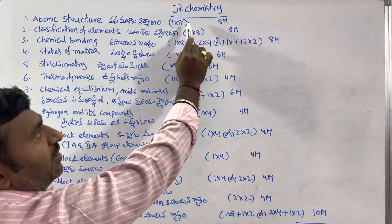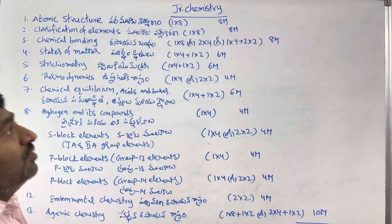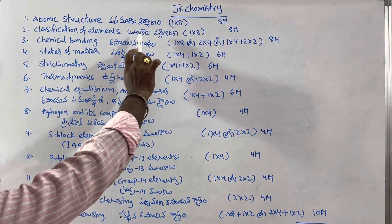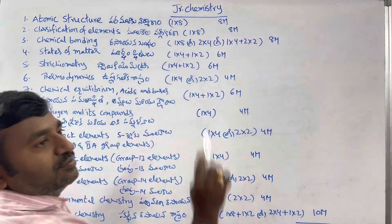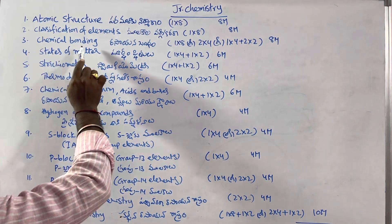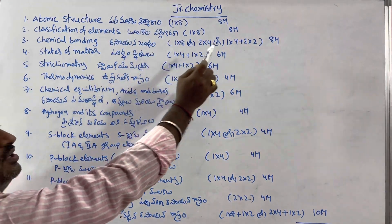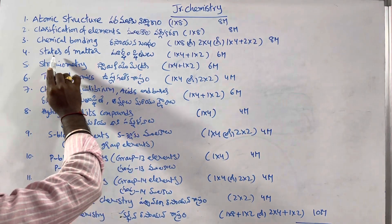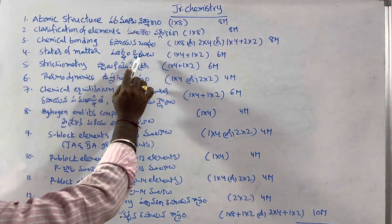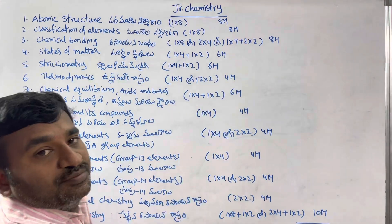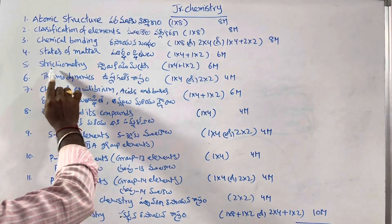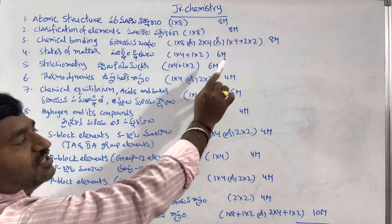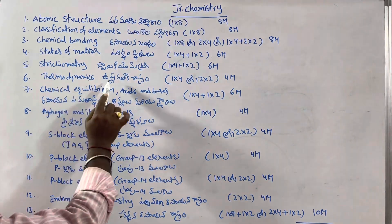Atomic Structure: 8 marks. Classification of Elements: 8 marks. Chemical Bonding: 8 marks. States of Matter: 6 marks. Stoichiometry: 6 marks. Thermodynamics: 4 marks.